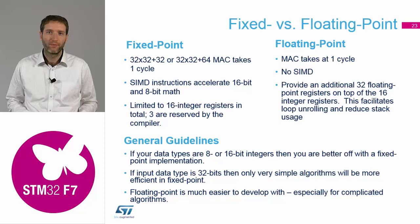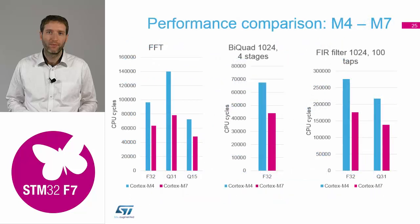If you face rounding issues, you can either rework your algorithm or convert to float, where these problems are very minor. Developing with floating point is usually much easier, but typically algorithms take a little more time to execute. A comparison here of typical algorithms — FFT, biquad filter with four stages, and a filter with 100 coefficients (TAPS) — between M4 and M7 running at the same speed shows that M7 is almost double the speed of M4.